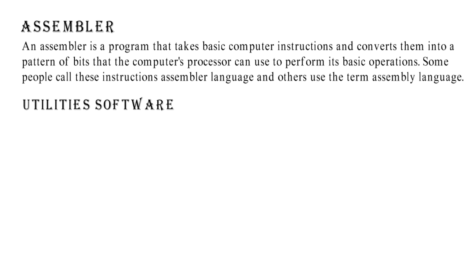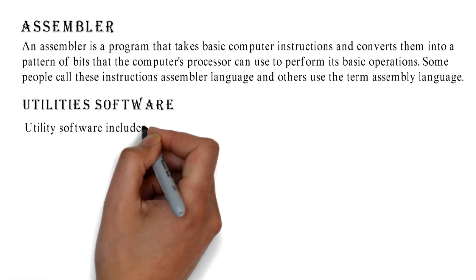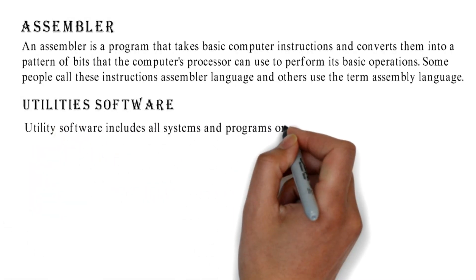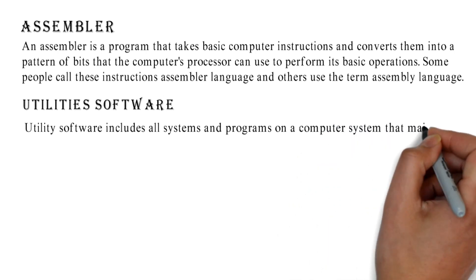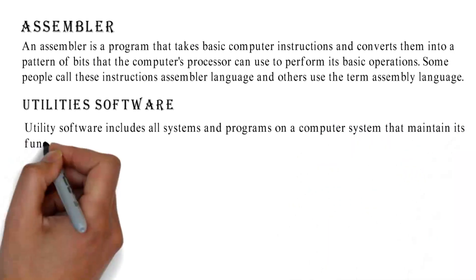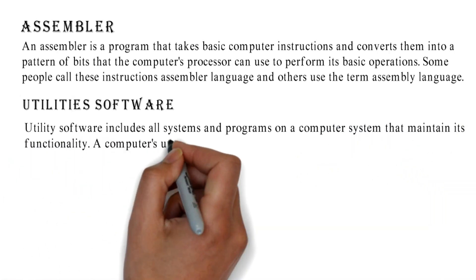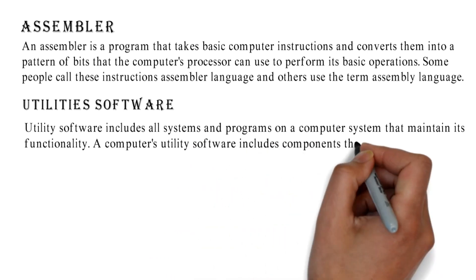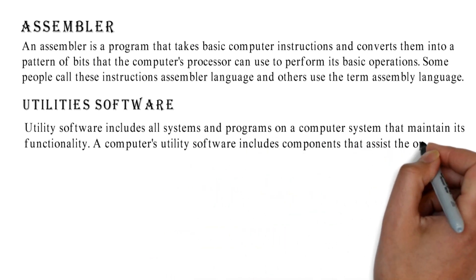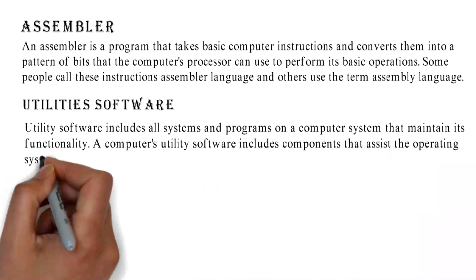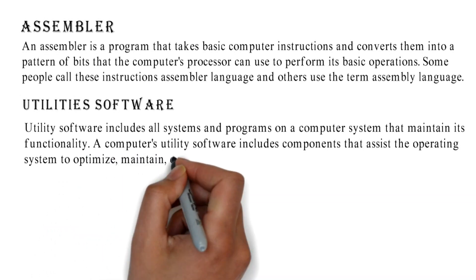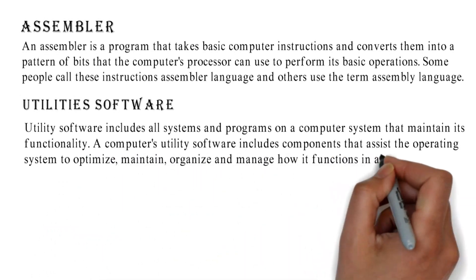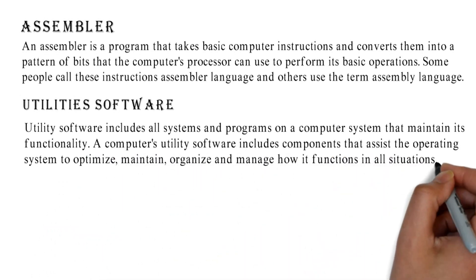Utility software includes all systems and programs on a computer system that maintain its functionality. A computer's utility software includes components that assist the operating system to optimize, maintain, organize, and manage how it functions in all situations.